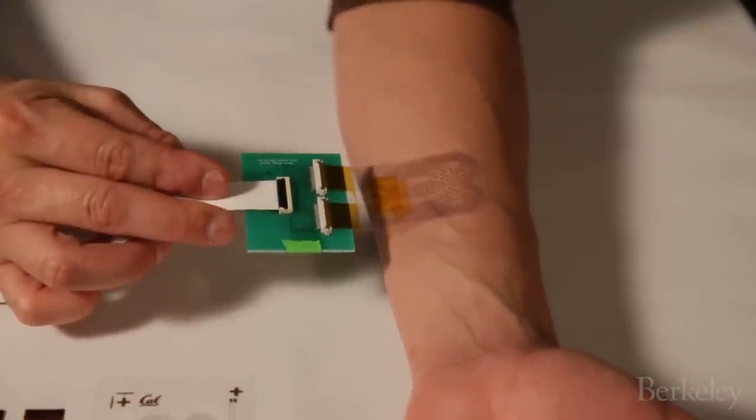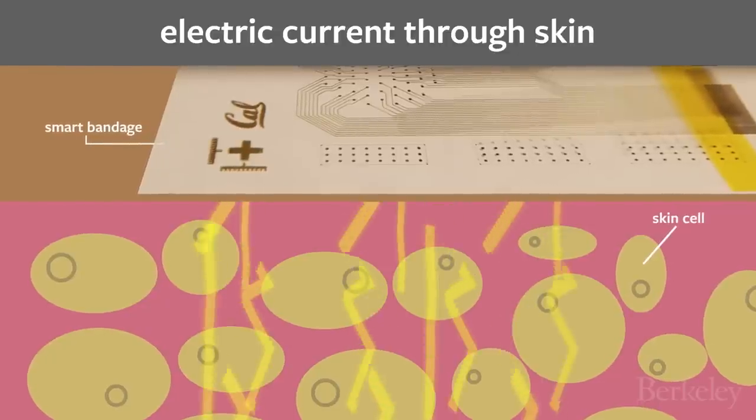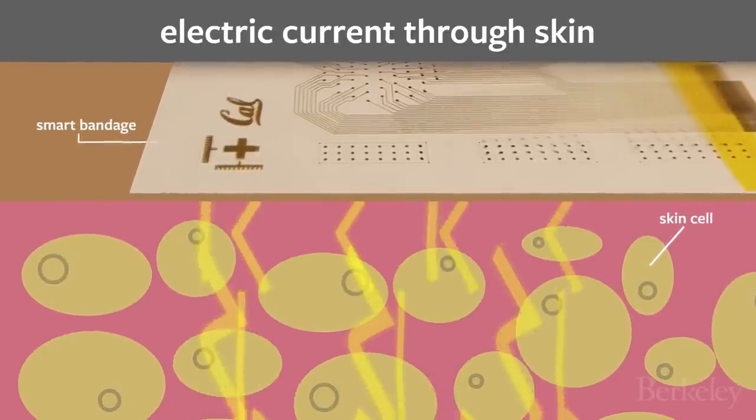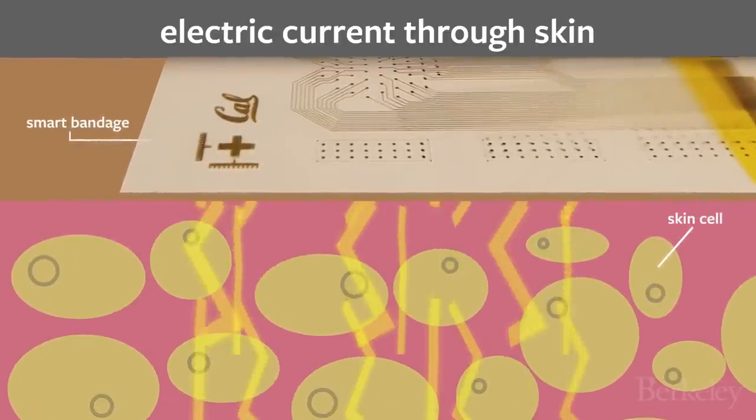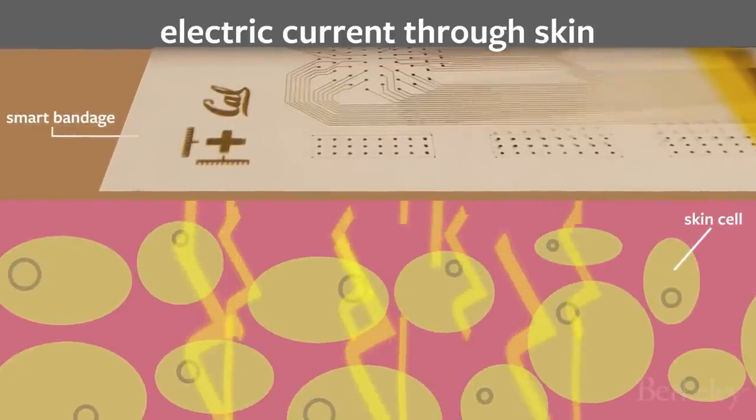You can imagine laying this on your skin. What all these little electrodes do is they're running lots of little bits of current through between themselves, and so when you take all that information you can build a map of the state of the bed sore underneath where the bandage is.